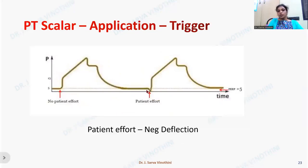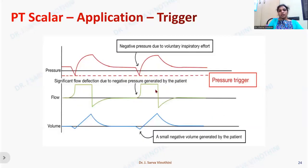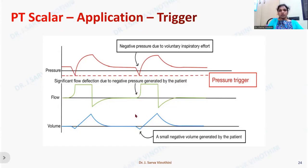The patient's effort can also be seen as a negative deflection in the pressure-time scalar — below the baseline or below the PEEP line. The pressure-time scalar can therefore be used to determine triggering. When the patient's effort reaches the set threshold, an assisted breath is triggered. You can see the negative pressure deflection occurring simultaneously in the flow waveform and volume waveform when an assisted breath is triggered.